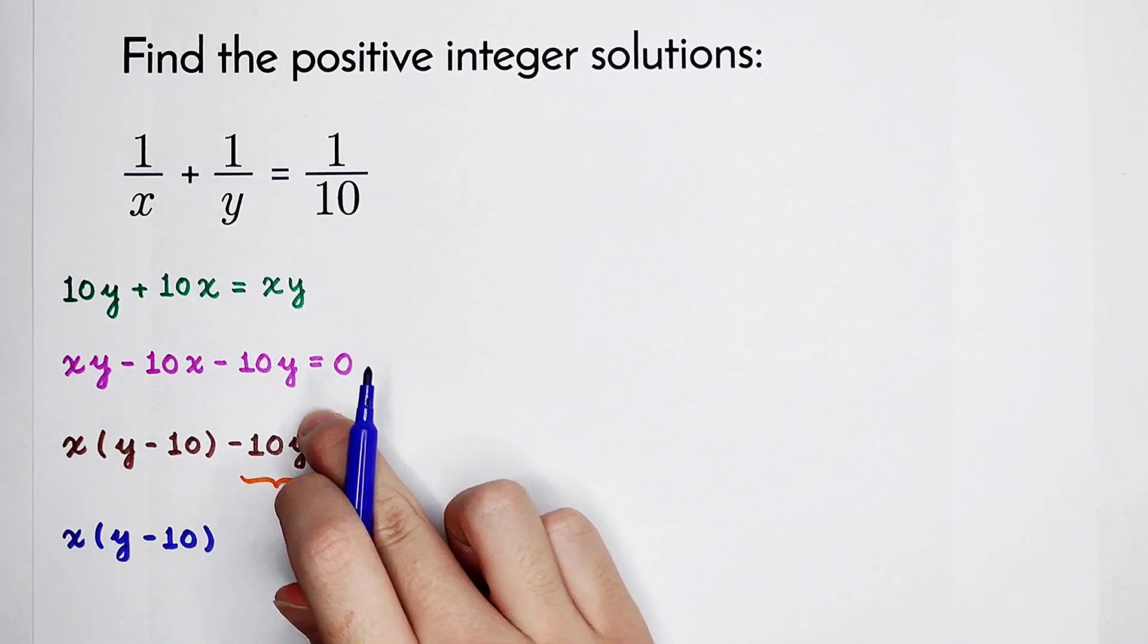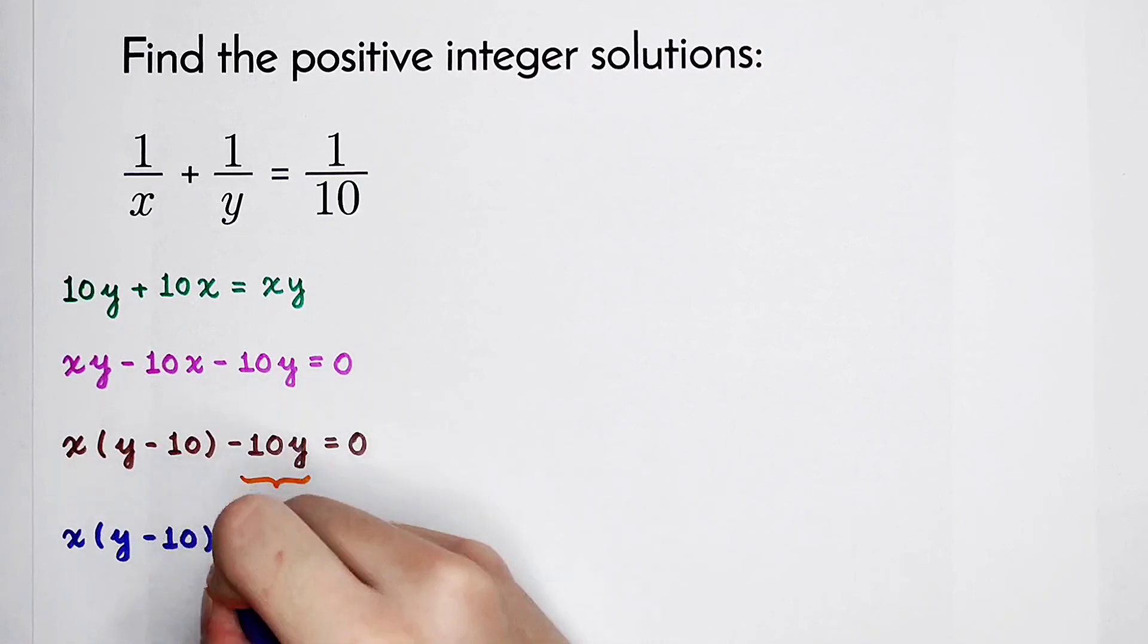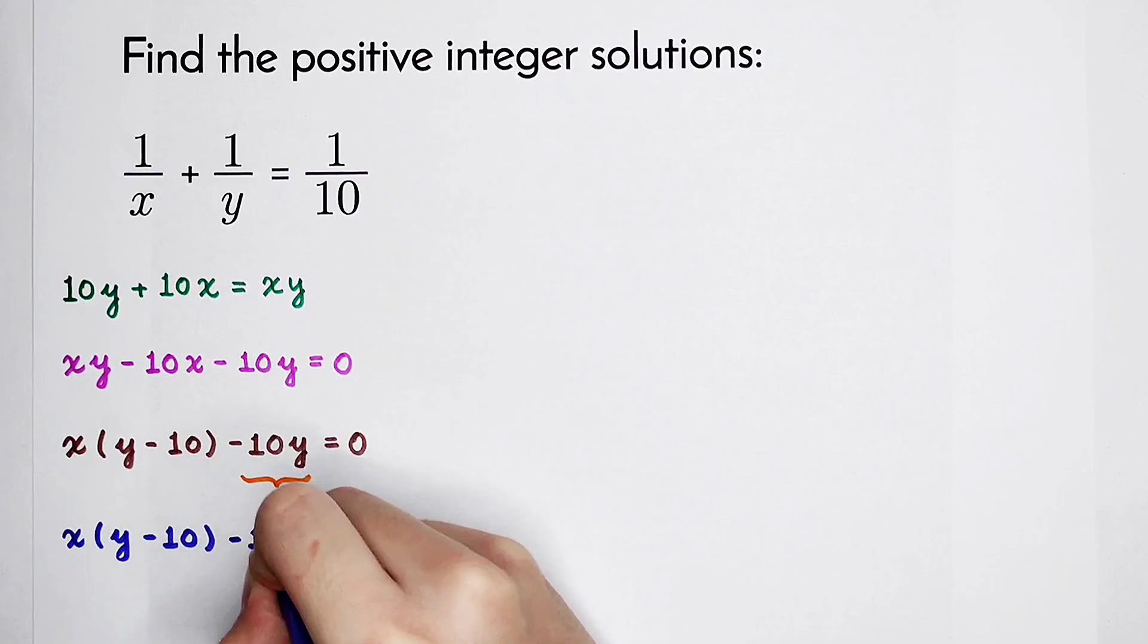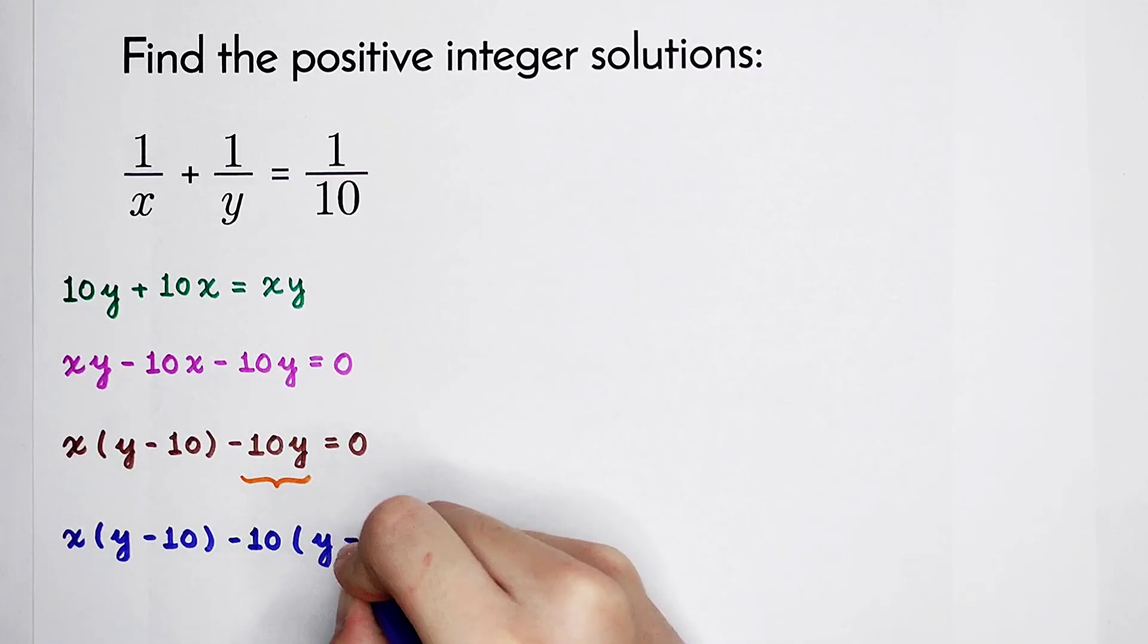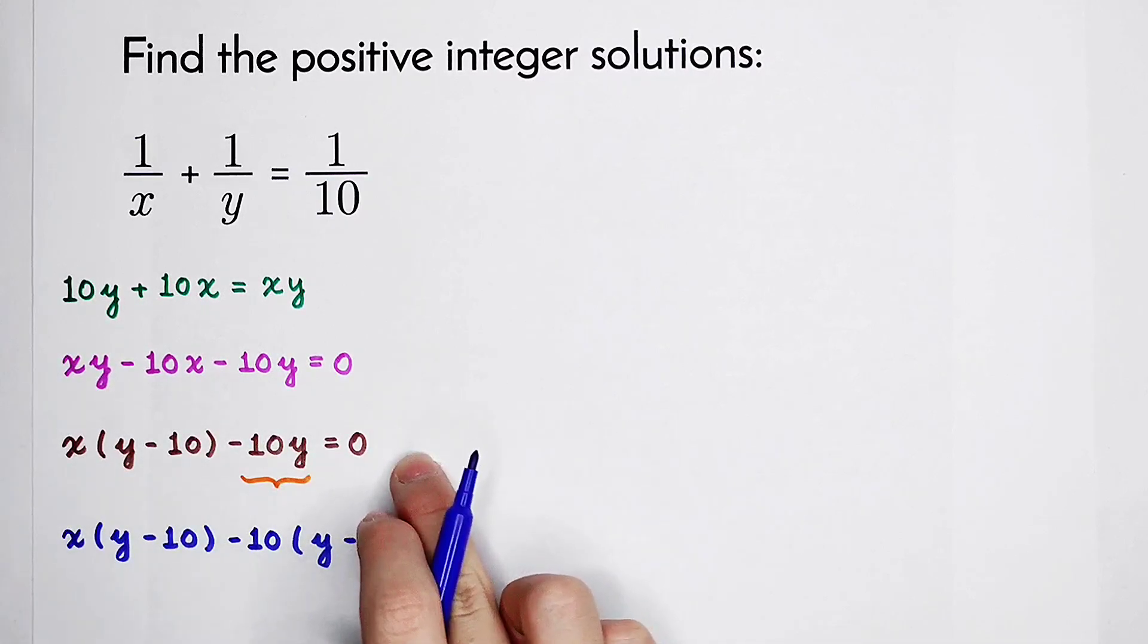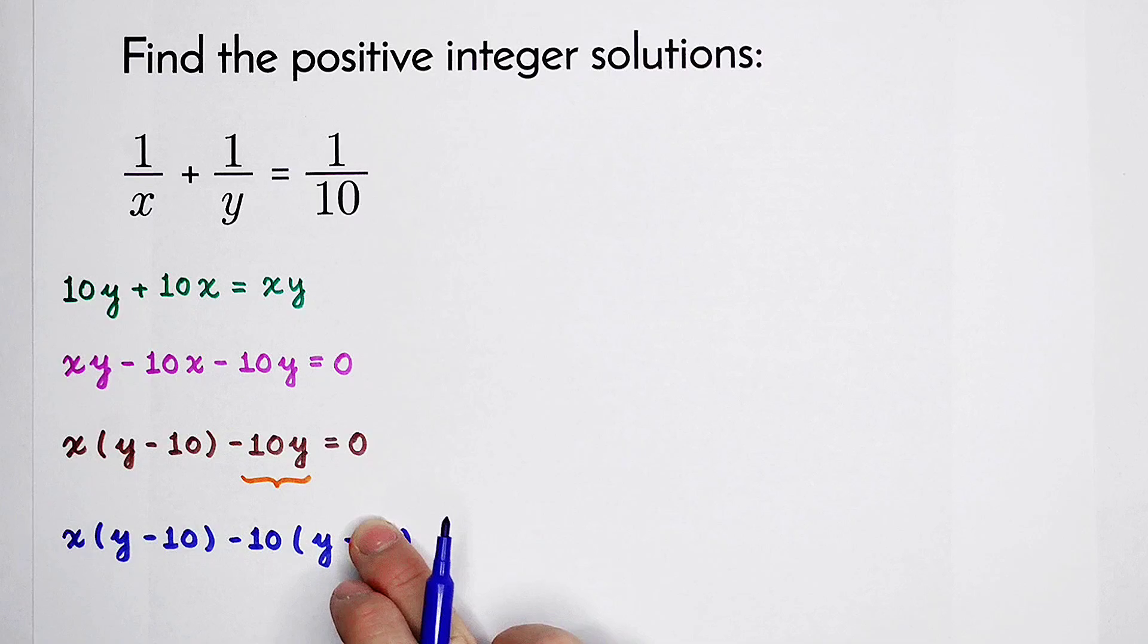Here is a y, and the coefficient is negative 10. So we have to take out a negative 10 and then times y. Because we want a y minus 10, so we write it as y minus 10. But we know that if you calculate it, there's plus 100. But in our original equation, there isn't a 100.